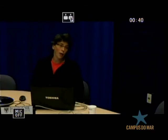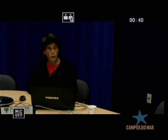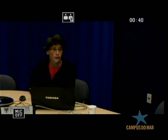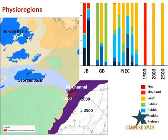We have focused our research on a few what we call physio regions. For the 2006 stations, these are Jordan Basin and George's Basin — two deep basins in the Gulf — Northeast Channel where water exits the Gulf, and three continental slope transects at depths of 1,500, 2,000, and 2,500 meters.